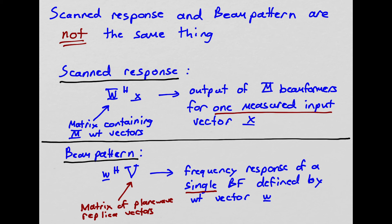The beam pattern is the frequency response of a single beamformer defined by one weight vector W. So I'm given a weight vector W, and I compute its beam pattern, which is its frequency response. I can also do that with a matrix multiply. In another video, we defined that as W Hermitian V, where V now is a matrix of plane wave replica vectors.